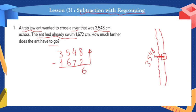Is 4 greater than 7? No, 4 is very small. So 4 takes 1 from 5. 5 becomes a 4 and the 4 becomes a 14. So 14 minus 7: after 7 — 8, 9, 10, 11, 12, 13, 14 — we get 7.